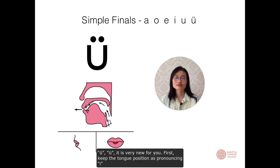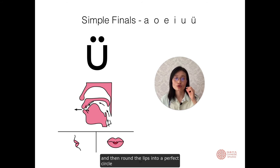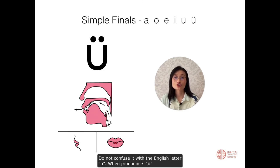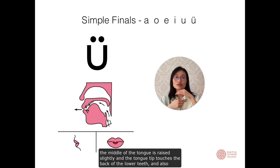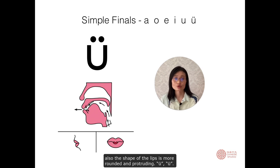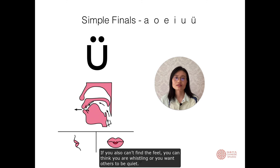Ü, w — this is very new for you. First, keep the tongue position as when pronouncing 'ee', then round your lips into a perfect circle as small as you can, and then protrude the mouth more. Don't confuse it with English letter U. When pronouncing ü, the mid of your tongue is raised steadily, the tongue tip touches the back of the lower teeth, and the lips are more rounded and protruding. If you can't find the feel, think of a whistle, or someone asking for quiet: shh.